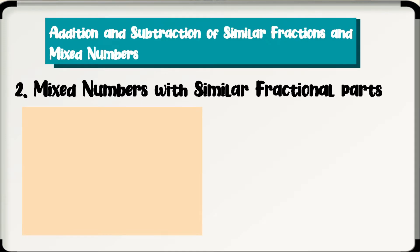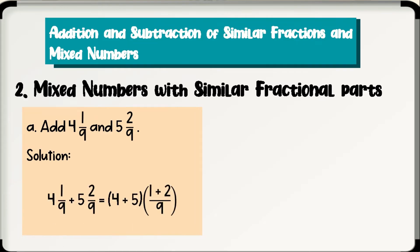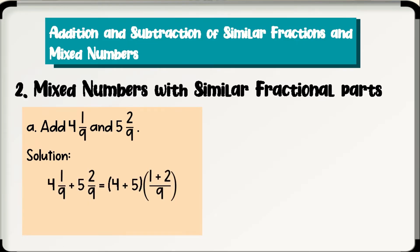For example, add 4 and 1 over 9 and 5 and 2 over 9. First, we will just add the whole numbers, which are 4 and 5. And for the fractional part, we will add the numerators 1 and 2, then copy the common denominator, which is 9. Simplifying, we have 9 and 3 over 9, or 9 and 1 third in lowest term.